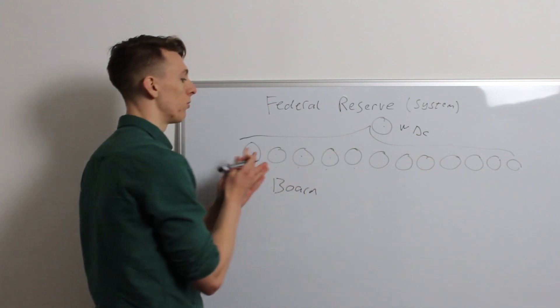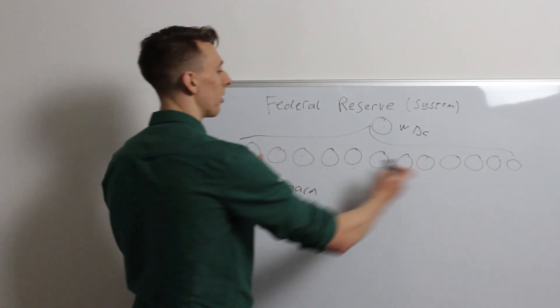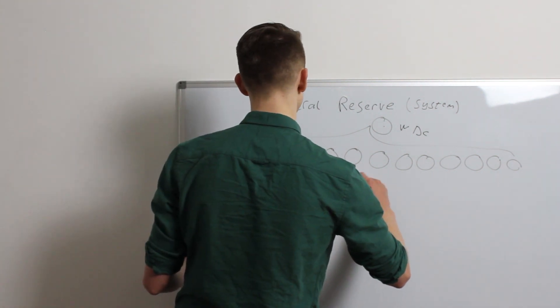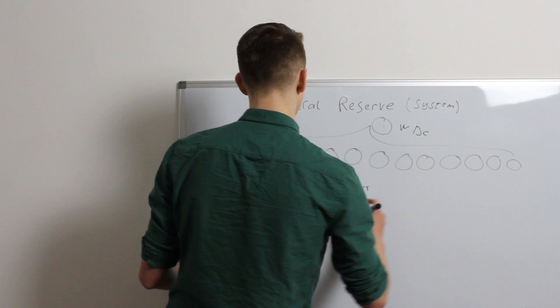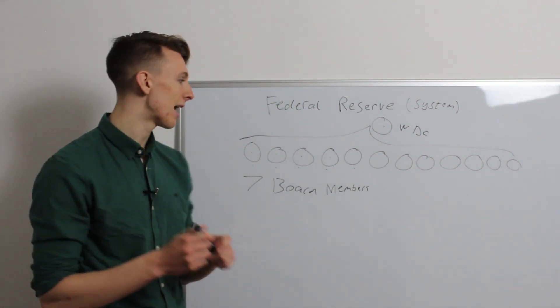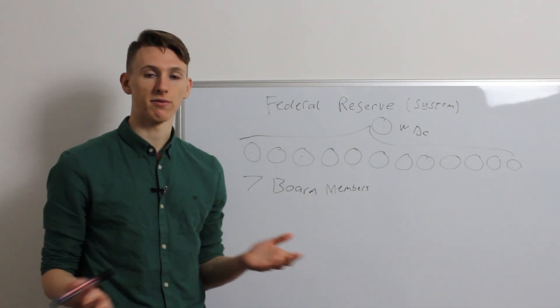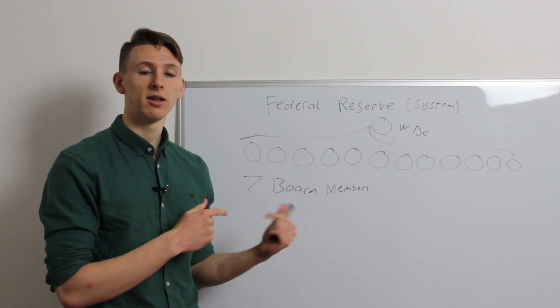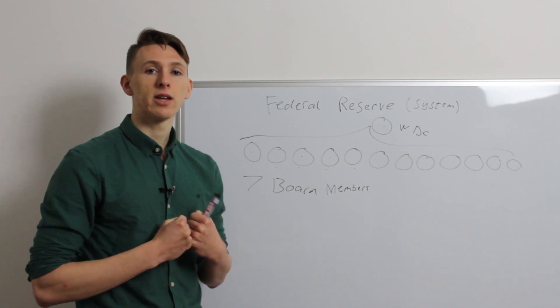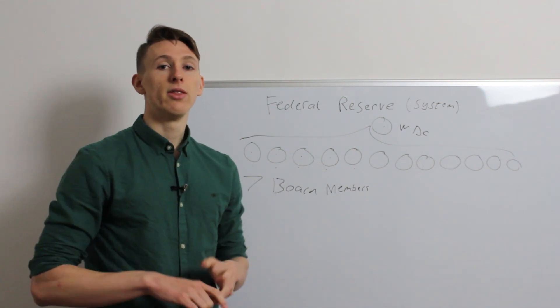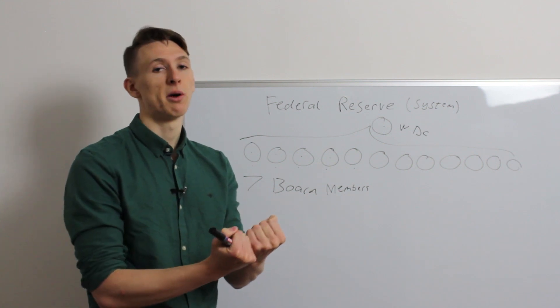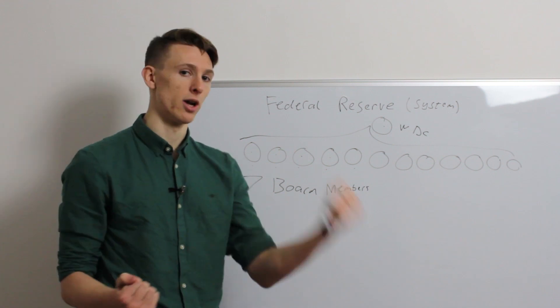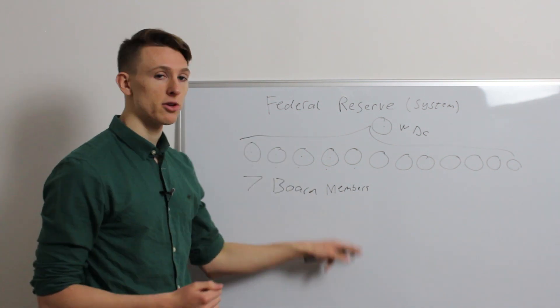It's actually seven board members. Seven board members vote on the policy that's followed by the rest of these 12 banks, and who appoints these members? How do they get the job of overseers of the Fed? Well, the president, i.e. Big Donald at the moment, says who he wants as the next board member. Then, once he's nominated that person, the United States Senate then says either yes or no. And so, that's how the seven board members get chosen.